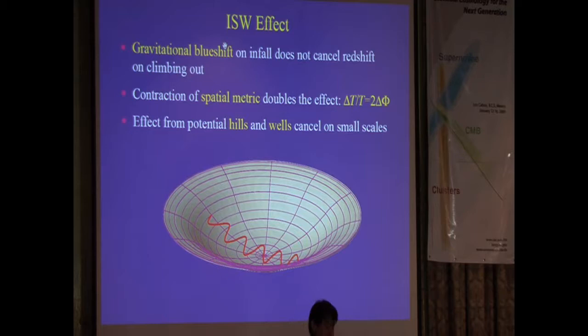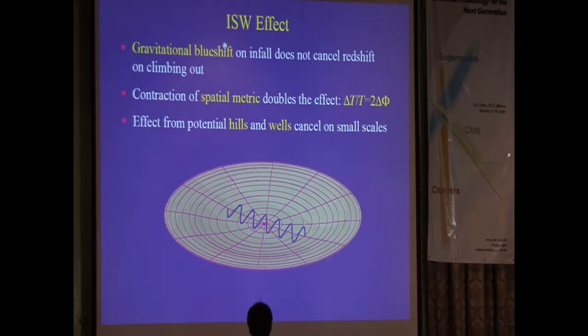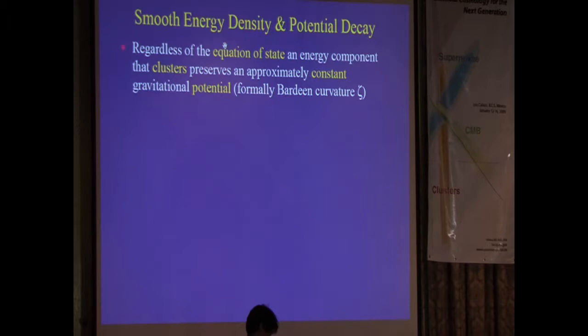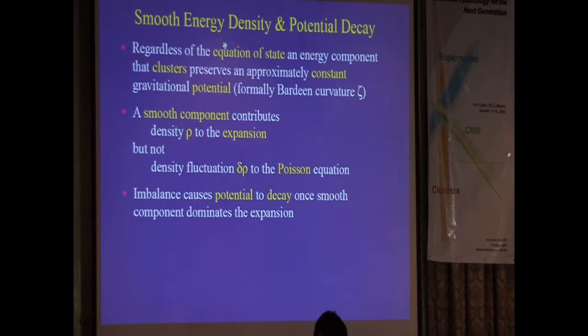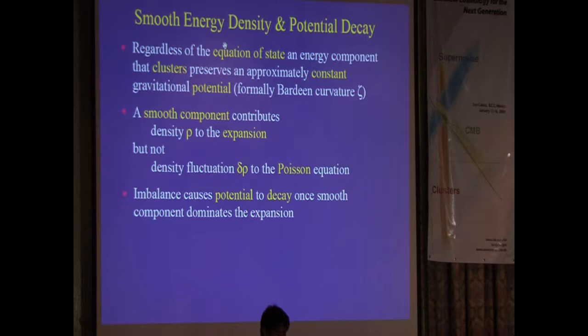There's a second effect — a metric stretching effect: the wavelength of photons in the presence of the spatial curvature of a gravitational potential well changes, and if that decays you get a doubling of the effect from the wavelength distortion. A smooth energy component contributes rho to the background metric in the Friedmann equation, but does not contribute to metric fluctuations through the Poisson equation, so you get a decay in the gravitational potential.